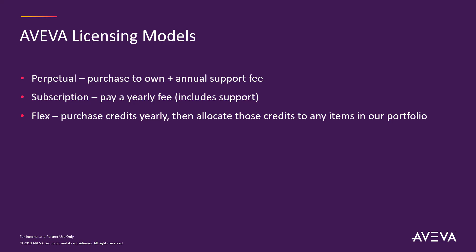Aviva now has a total of three license models. Perpetual, which is to purchase the license once to own it and renew an annual support fee. Subscription, which is to lease the software with an annual fee. Or Flex, where the customer purchases credits yearly and allocates those credits to any items within our portfolio.